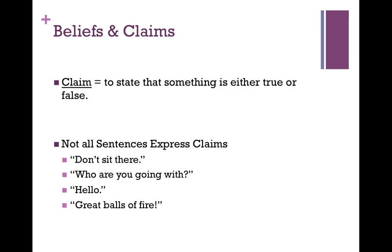Many sentences in the English language don't express things that are true or false. For instance, if I say 'don't sit there,' you wouldn't respond 'false' — that wouldn't make sense. Or if I ask 'who are you going with?' and you said 'true' back to me, that wouldn't make sense either. Questions aren't true or false. A greeting like 'hello' is not something that is true or false. Claims are things that are true or false — and not all sentences necessarily are. This distinction is more or less straightforward, but it's important to keep in mind.